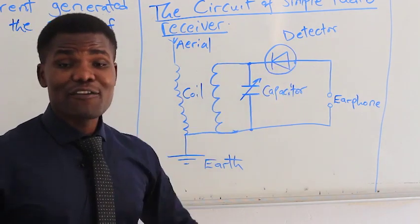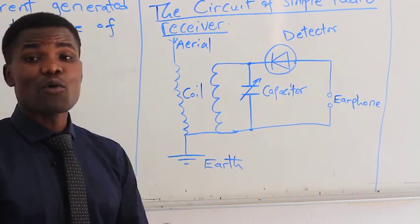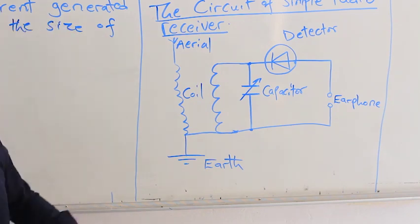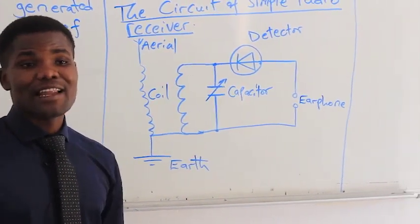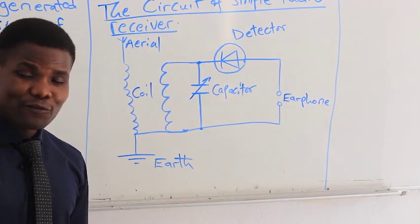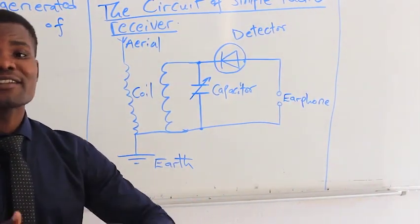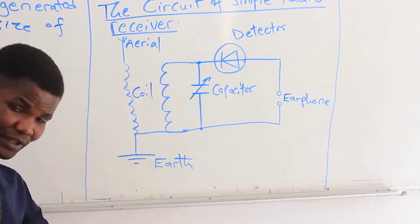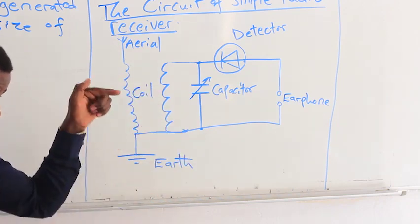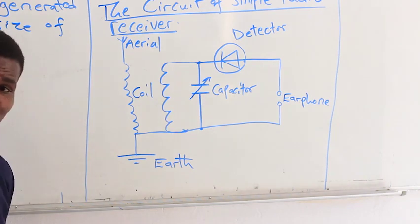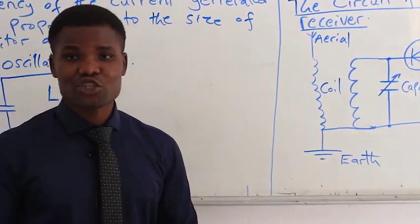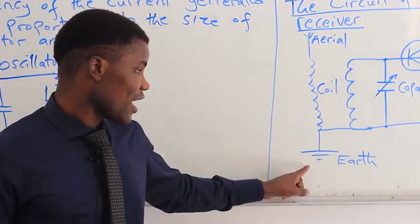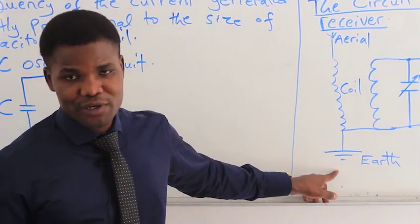A detector realizes or detects the presence of a wave coming into your radio system so you can receive the information. The earphone acts like a loudspeaker — when alternating current flows through it, it generates sound you can listen to. The earth connection connects the aerial to the ground, which helps transmit excess charges into the ground so you remain safe from a shock that could possibly be dangerous.